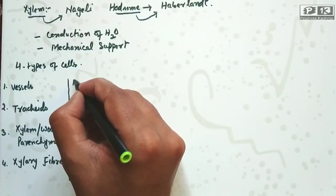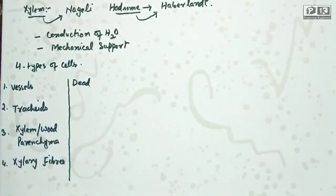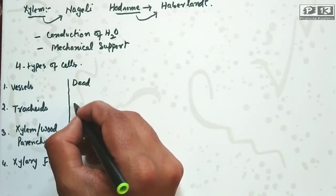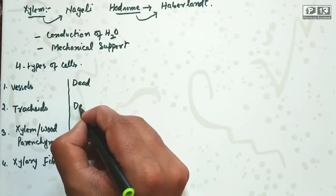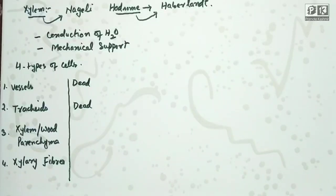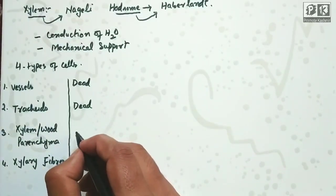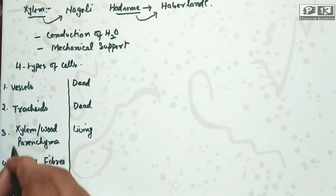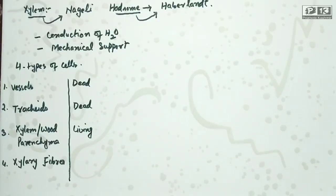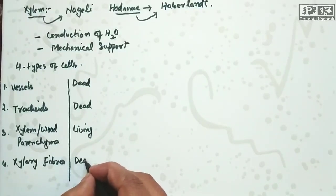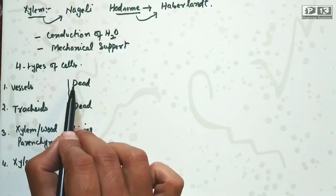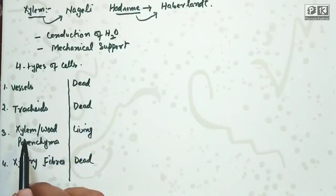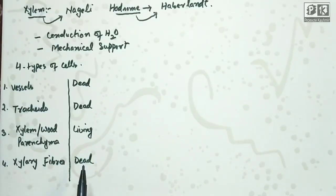Vessel is dead at maturity. Tracheid is also dead at maturity. Xylem parenchyma is living. Xylem fibers are dead.